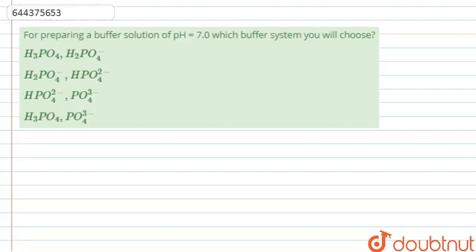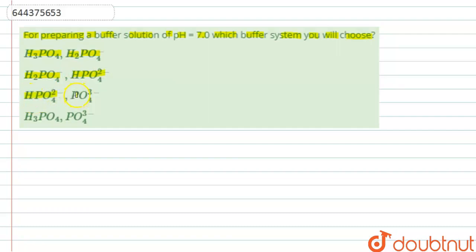Hello friends. The question given here is: for preparing a buffer solution of pH equal to 7, which buffer system will you choose? The first option is H3PO4 and H2PO4⁻, the second option is H2PO4⁻ and HPO4²⁻, and the third option is HPO4²⁻ and PO4³⁻.